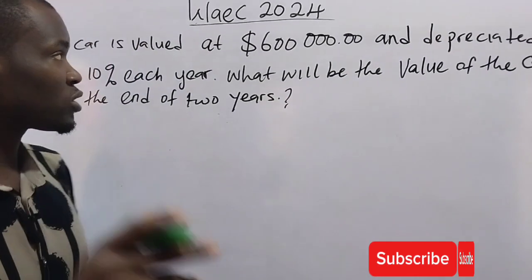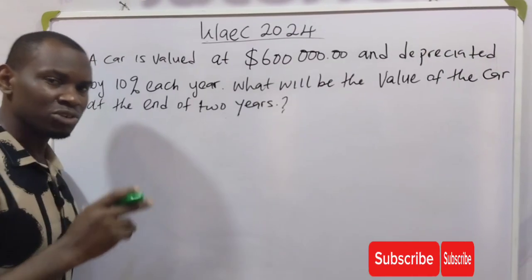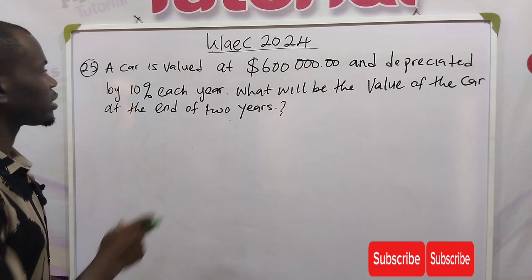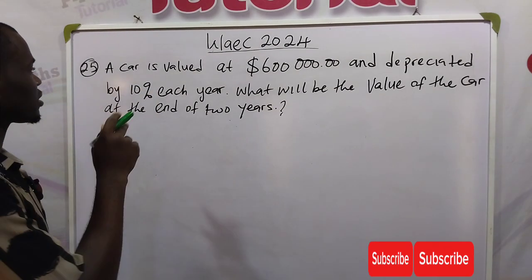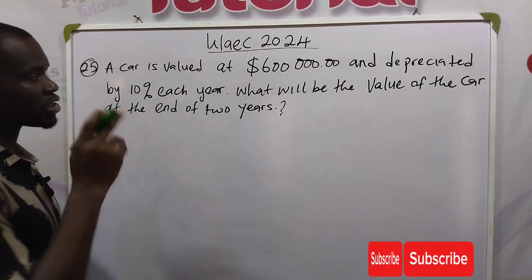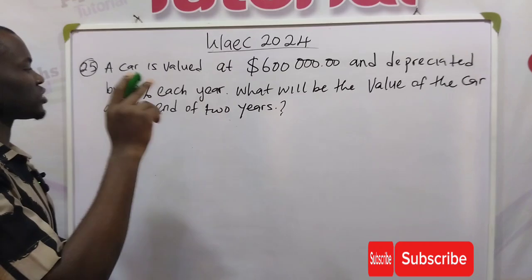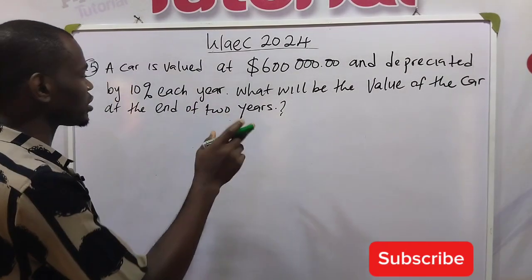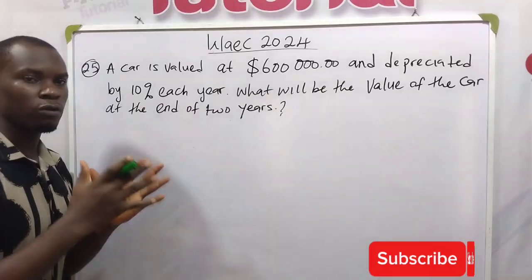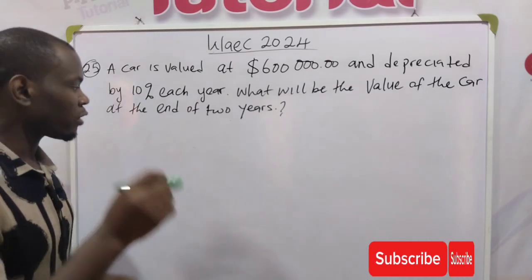Welcome back to my channel. Let's solve 2024 WAEC mathematics past question number 25, a depreciation question. The question says a car is valued at six hundred thousand dollars and depreciated by ten percent each year. What will be the value of the car at the end of two years?